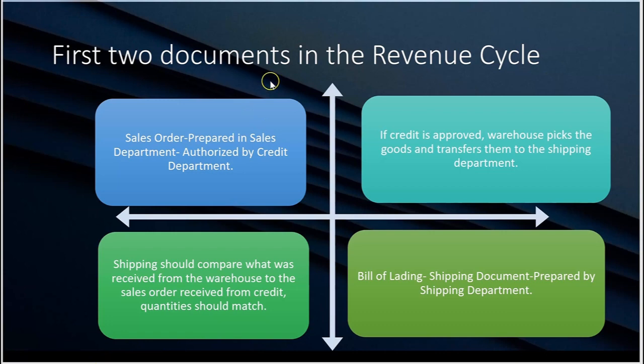We'll start out with the documents. The first two documents in the revenue cycle: number one is the sales order form, prepared in the sales department. The customer order comes in, and usually on the exam your client extends credit to its customers, which means they ship out the goods prior to getting paid.